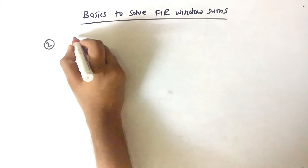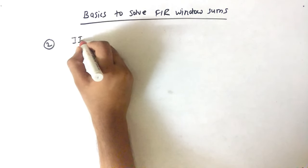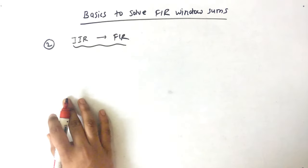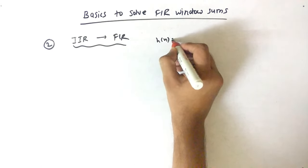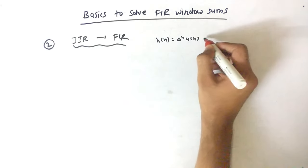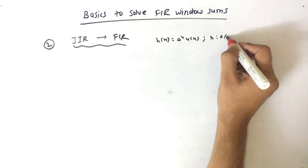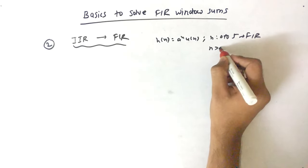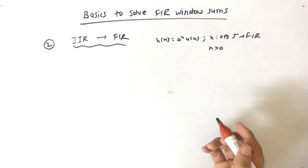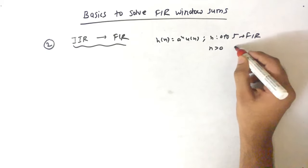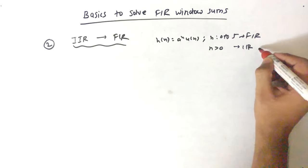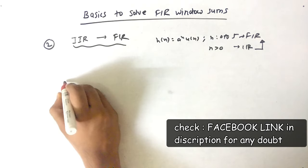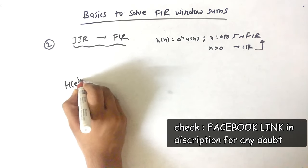Our second basic is how to convert Infinite Impulse Response to Finite Impulse Response. If I say H of N is A raised to N U of N and N ranges from 0 to 5, this means it is FIR. But if I say N is greater than 0, there is no specified range. It can be 0 to infinity, so this is IIR. Basically, H of E raised to J Omega is given.